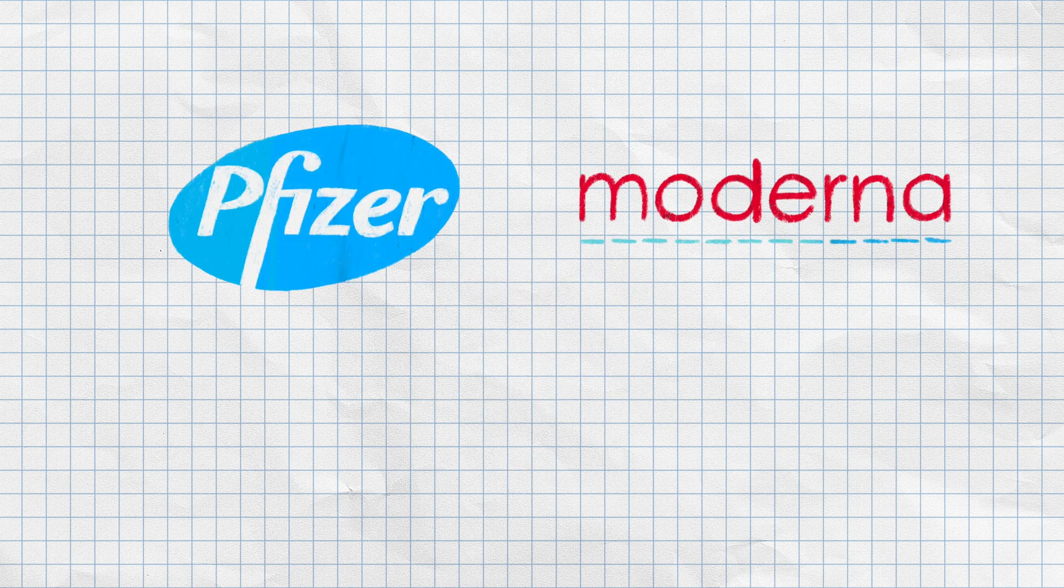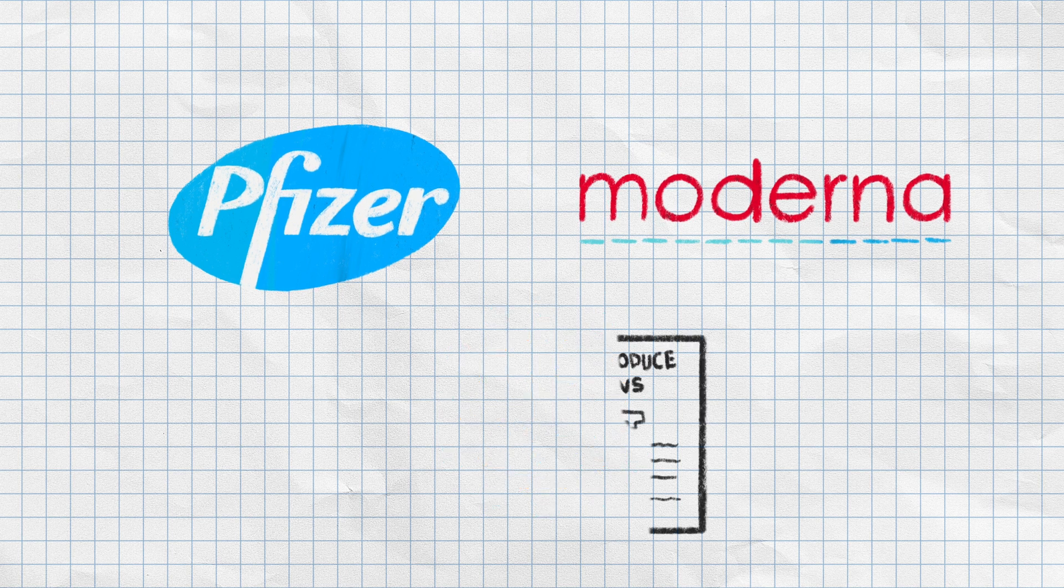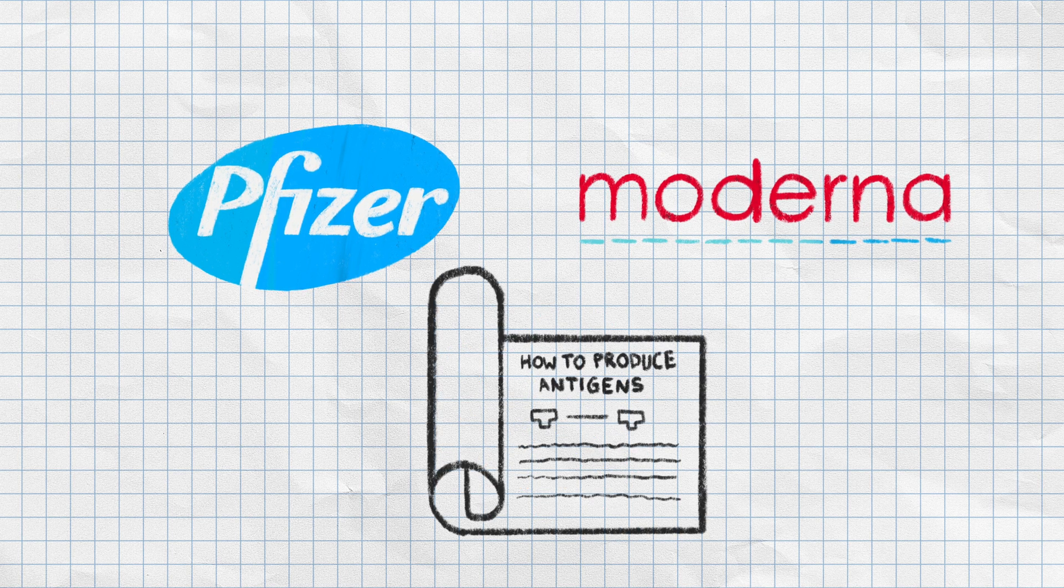However, newer vaccines, such as the Pfizer and Moderna vaccines against COVID, don't contain any part of the virus at all, but instead contain a blueprint for producing antigens.